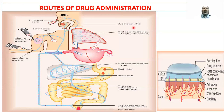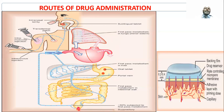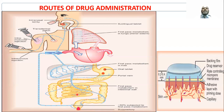We also have the sublingual route, where the drug is placed under the tongue. We also have the rectal route of drug administration. When the drug is taken through the anus rectally, the drug gets absorbed — 50% of the drug is absorbed through the external hemorrhoid vein, which will not undergo first-pass metabolism.